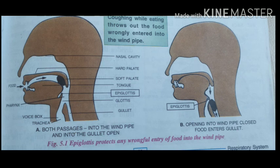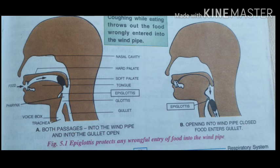These are the positions of the organs we studied — pharynx, larynx, glottis, and epiglottis. Here are two figures. Figure A shows both passages: the passage into the windpipe and into the food pipe. Figure B shows the opening into the windpipe and the closed entrance to the food pipe when food enters.